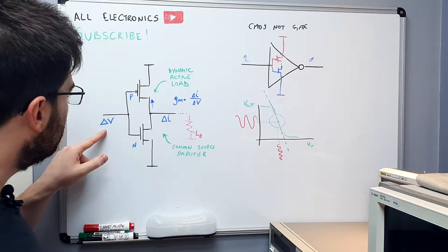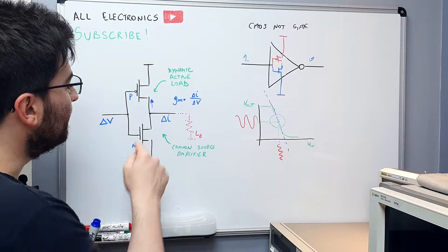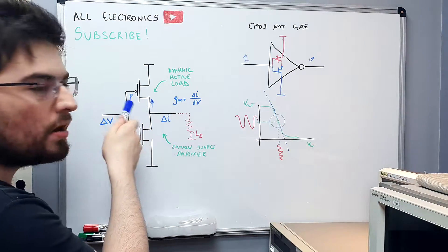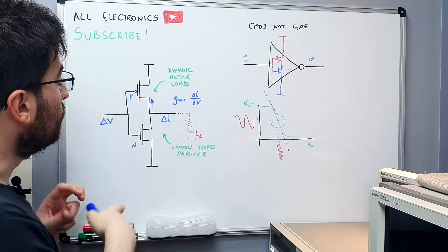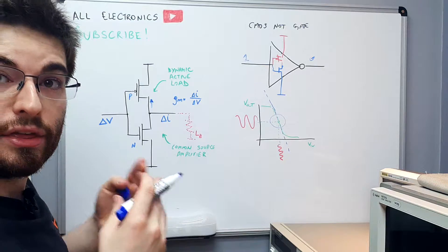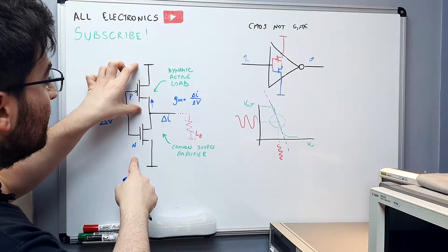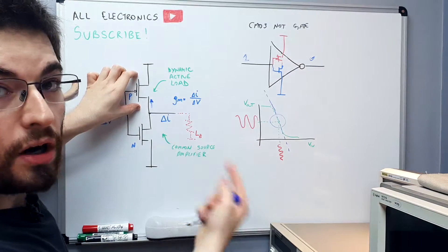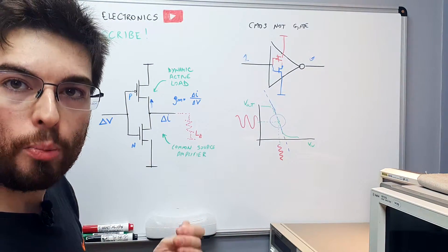When the small signal on the input is lower, the NMOS device will try to pump less current on its drain. But the PMOS device, as it works in the reversal way than the NMOS, will try to pump more current. So we can think that we have an NMOS amplifier with a resistance that now becomes lower. So it helps to decrease even more the signal. The PMOS device is a dynamic load that helps to increase the gain.